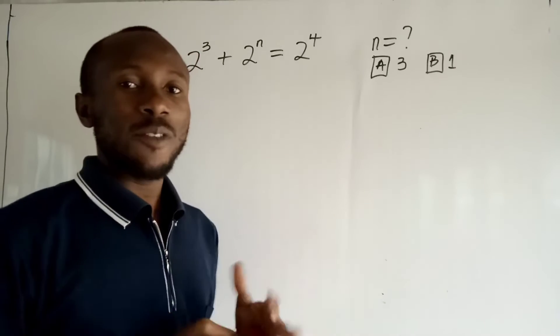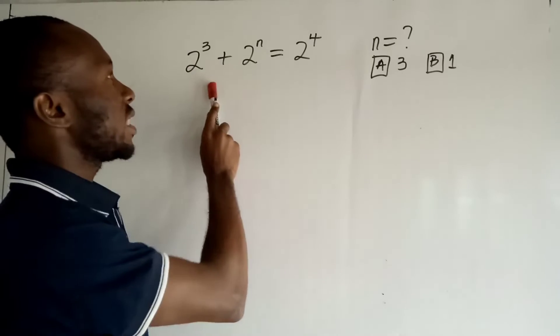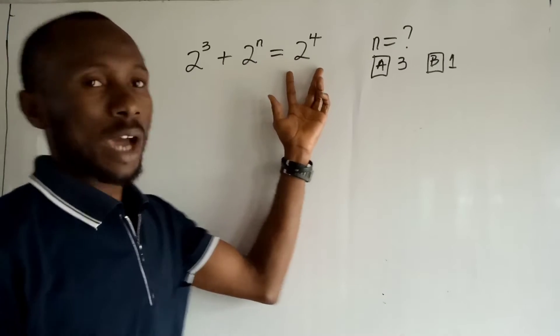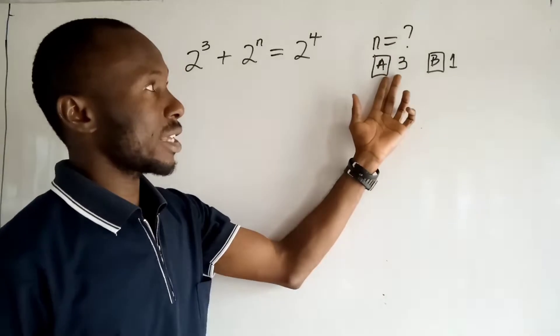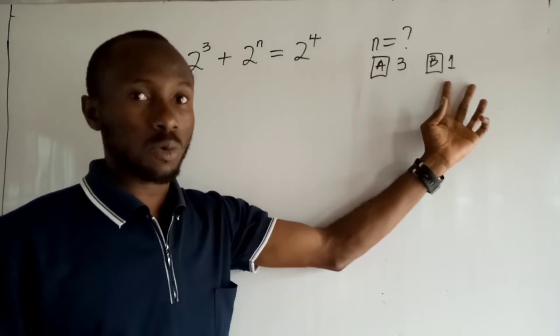Welcome viewers, today we have another question for you. Today's question is 2 to the power 3 plus 2 to the power n is equal to 2 to the power 4, and we are asked to find the value of n. The options here are: is n equal to 3, or is n equal to 1?